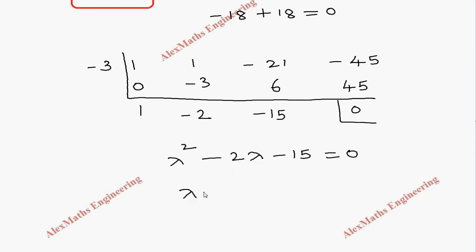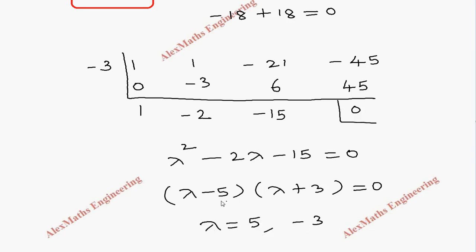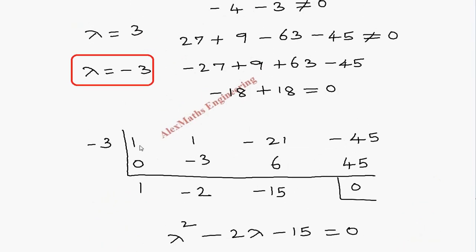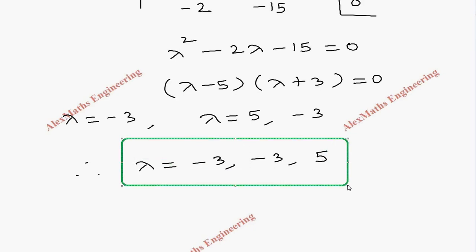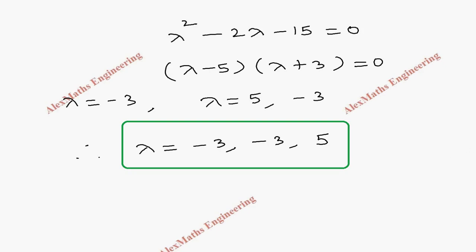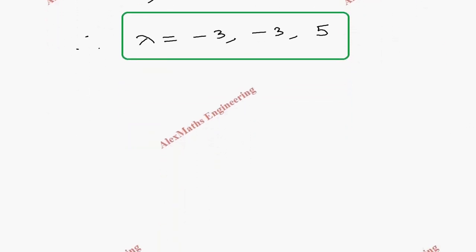Factoring the quadratic: the product is minus 15, sum is minus 2, giving (lambda minus 5)(lambda plus 3) equal to 0. This gives lambda equal to 5 and lambda equal to minus 3. Combined with the earlier root of minus 3, the three eigenvalues are lambda equal to minus 3, minus 3, and 5, where minus 3 is a repeated value.